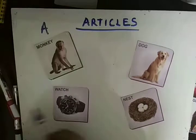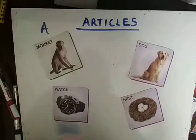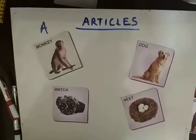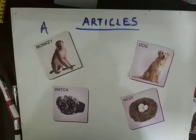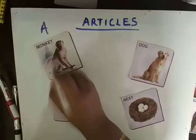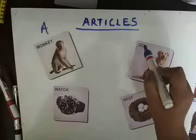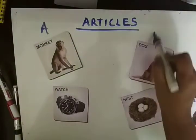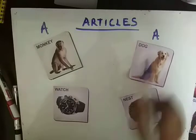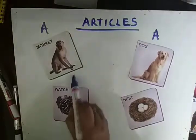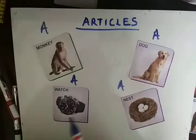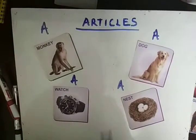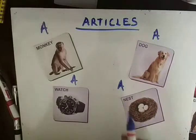Monkey starts with a consonant sound M, so we write A here — a monkey. When A is alone as an article, we pronounce it as 'uh'. So: a monkey. Dog — a dog, consonant sound. A watch, a nest — all start with consonant sounds. There are many such examples.